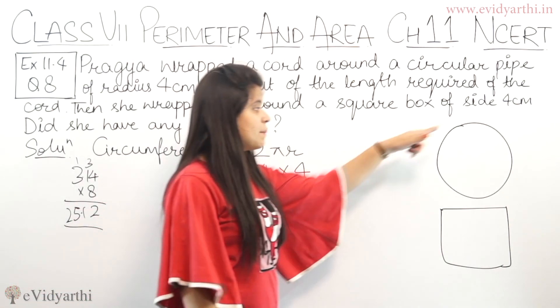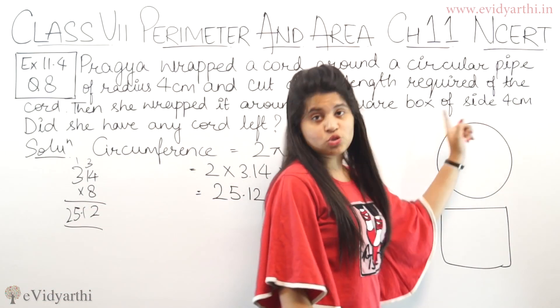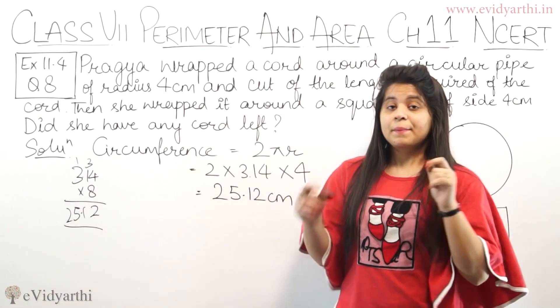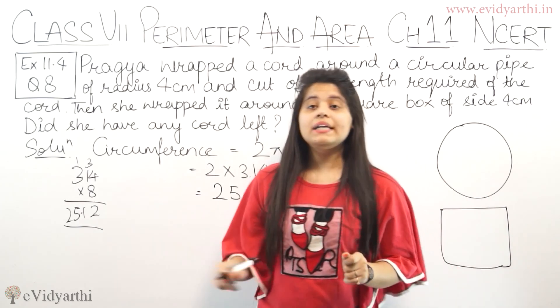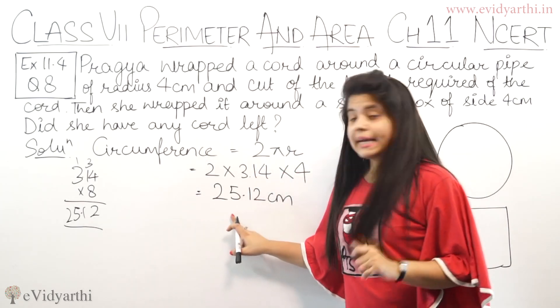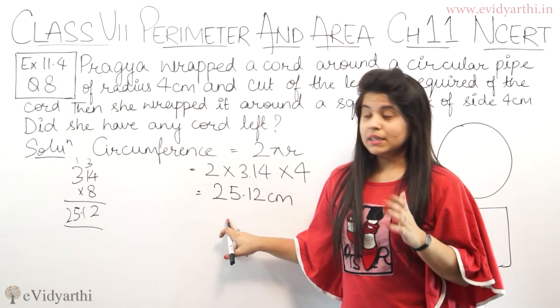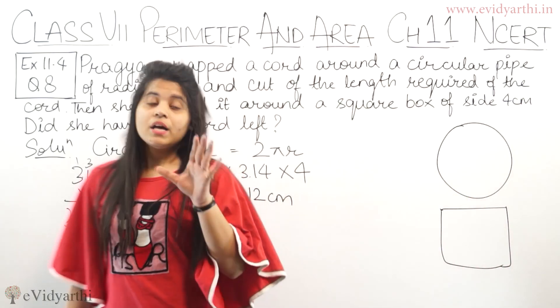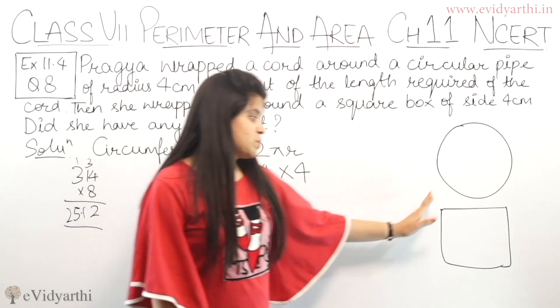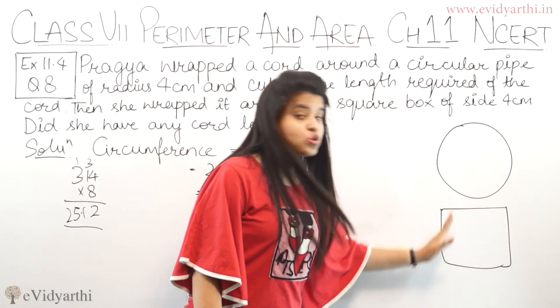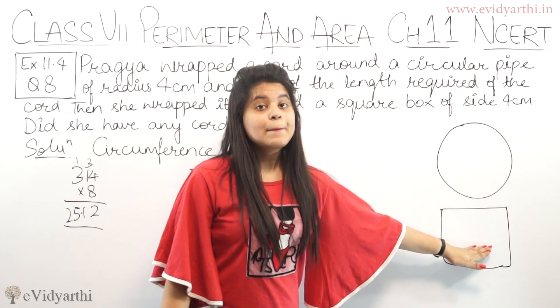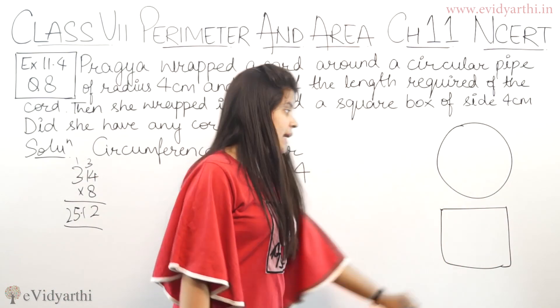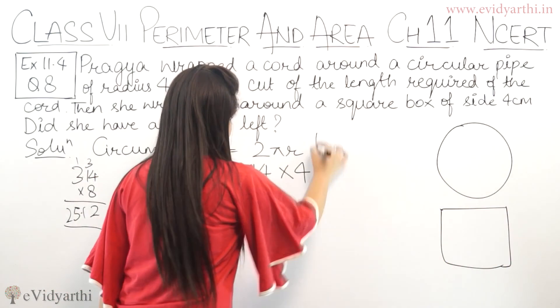This means the circumference tells us the length of the cord. The cord we have taken is 25.12 cm in length. Now, after this, we are wrapping it around a square box, so we need to find its perimeter.